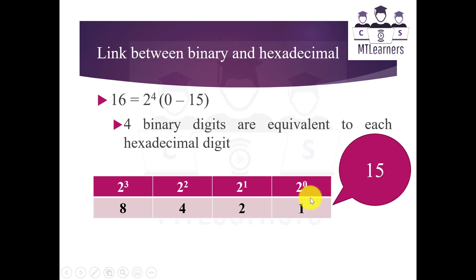What is the link between binary and hexadecimal numbers? We can see that 2 raised to the power 4 is equivalent to 16. So the base we are using is 16. We can say that 2^4 is the binary number that is representing a hexadecimal number, which means 4 bits will be representing one hexadecimal digit, as you can see in this table.